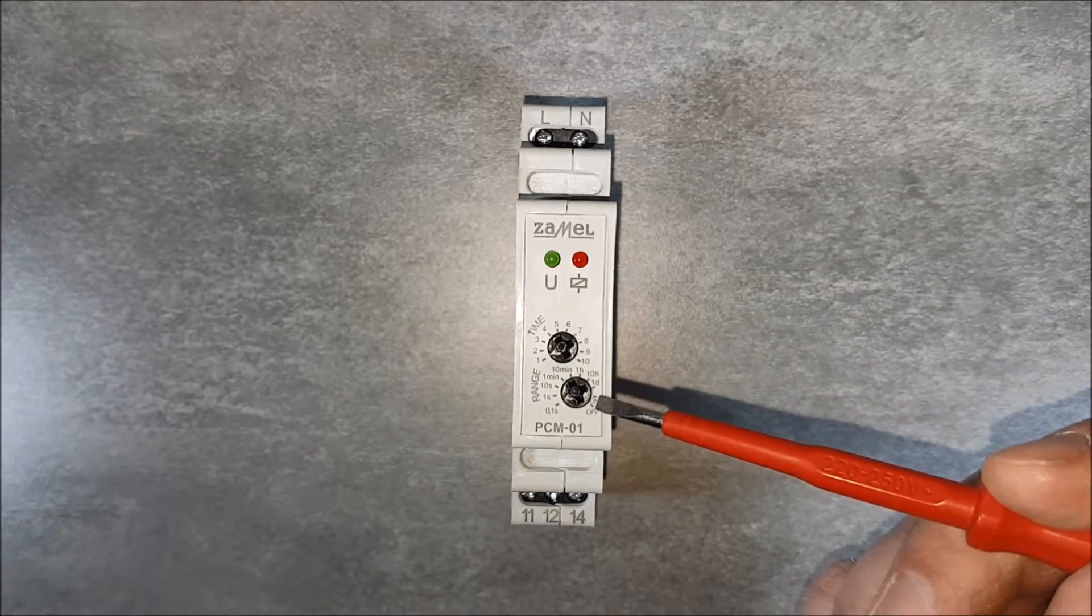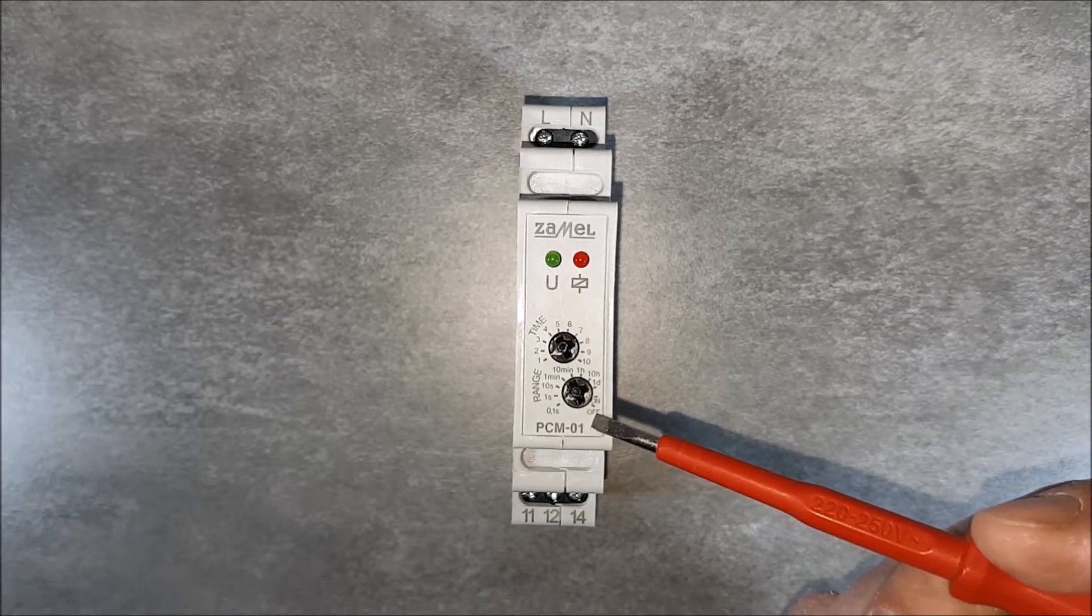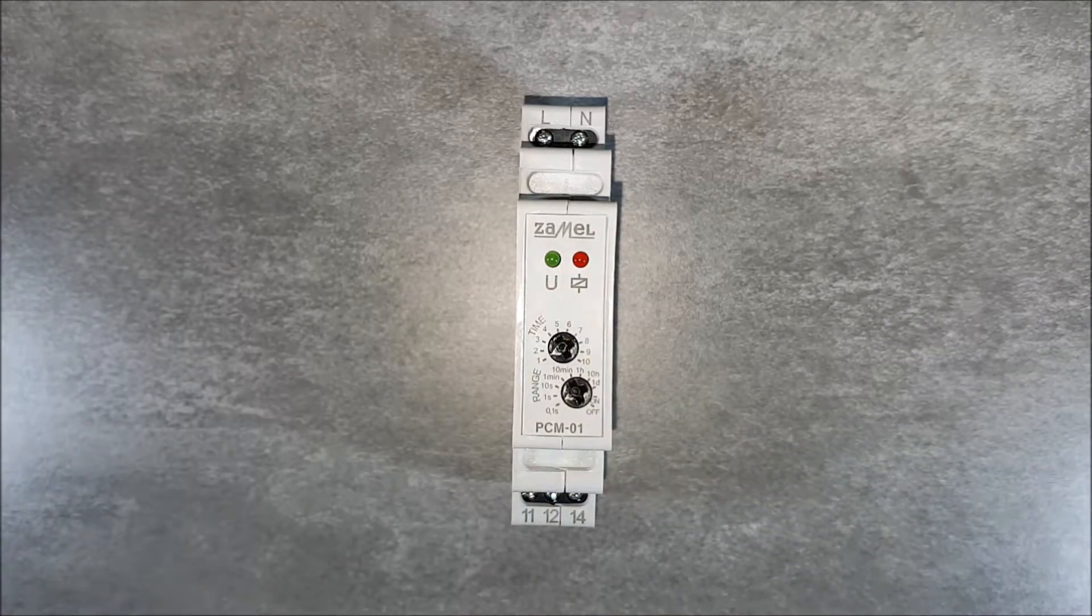Additionally, it is possible to switch the relay on or off permanently by using the on-off function available on the range potentiometer.